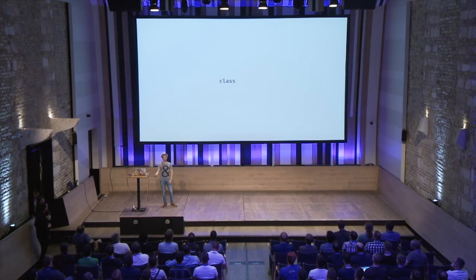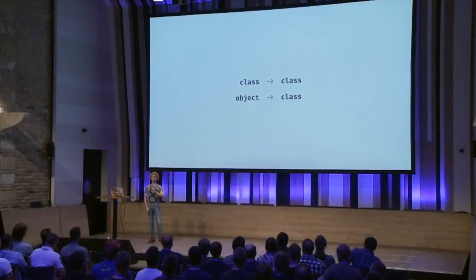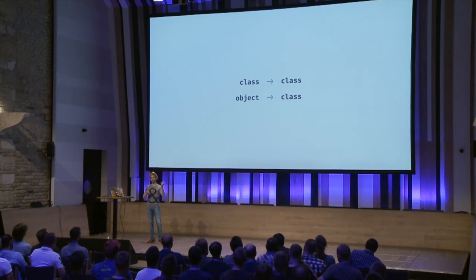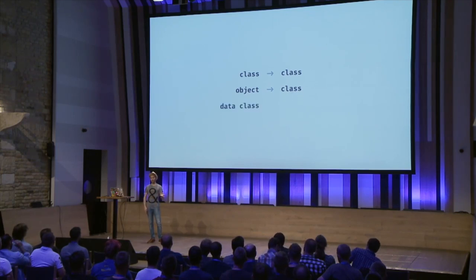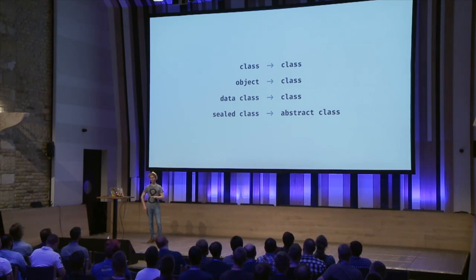A class is a class — that's fine. But an object is still a class, because an object is like a singleton instance, which is both a class and the single instance that implements that class. But from the point of view of the JVM, there's no difference. A data class is a class. A sealed class is an abstract class — slightly different, but still almost there.